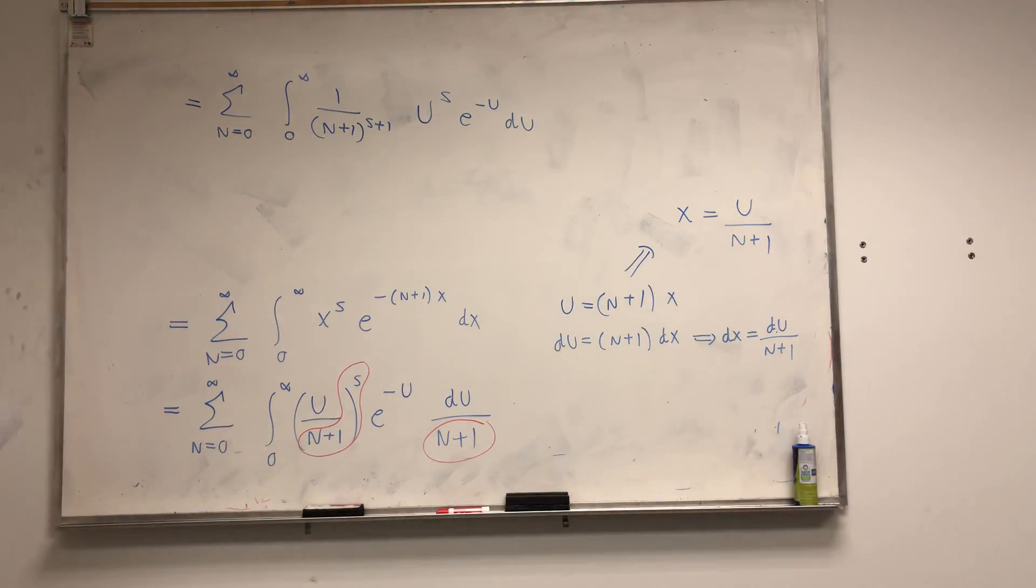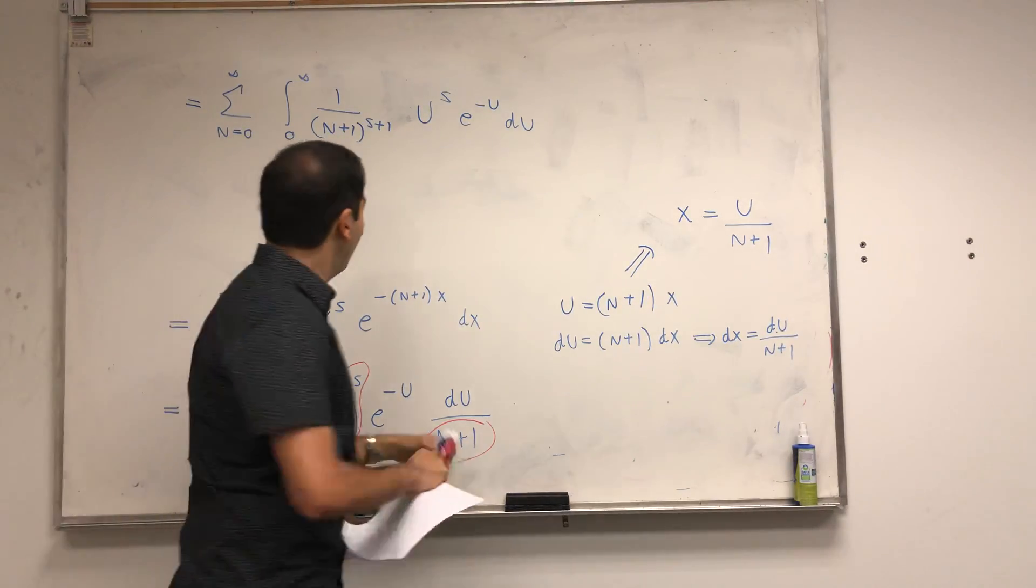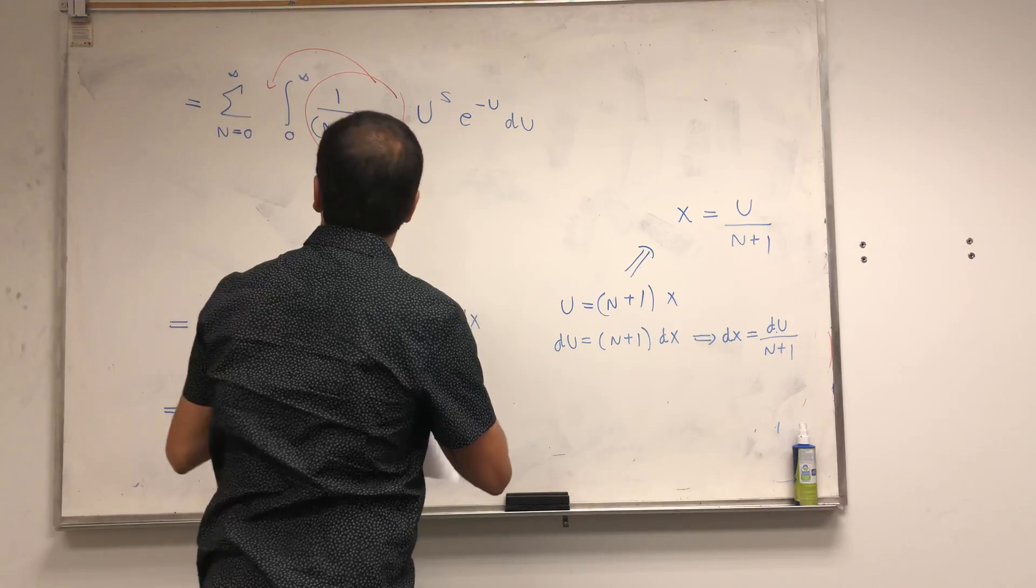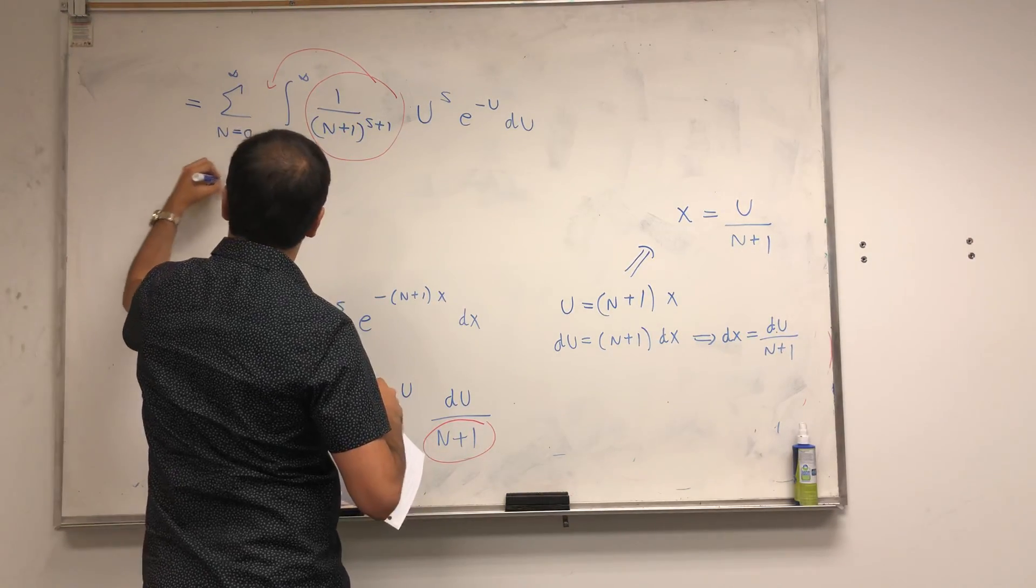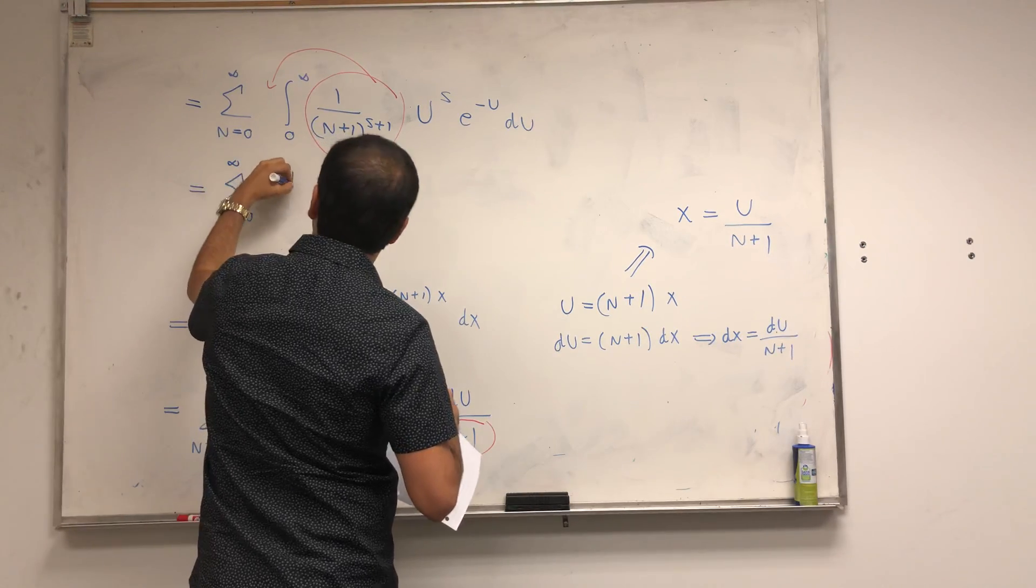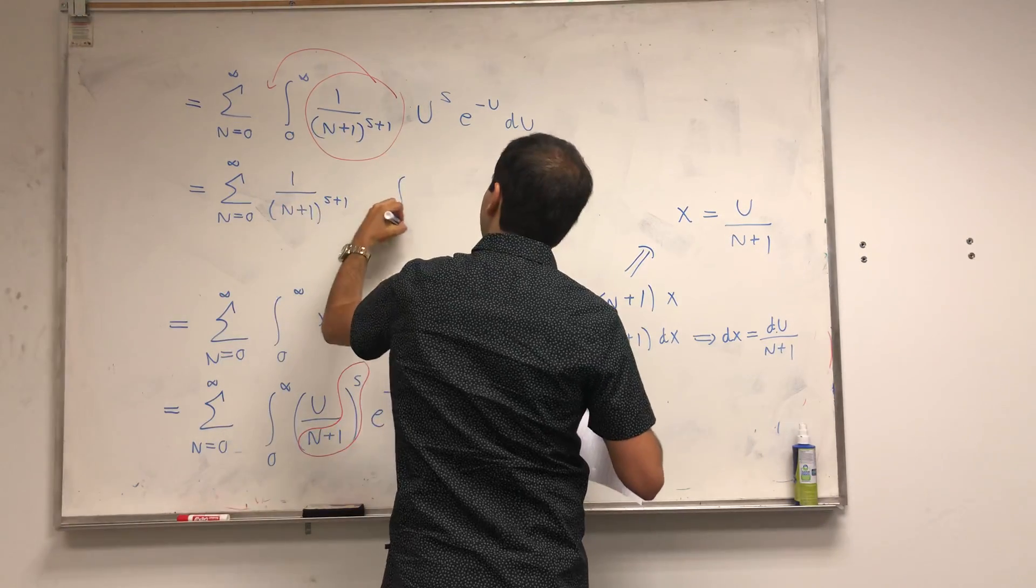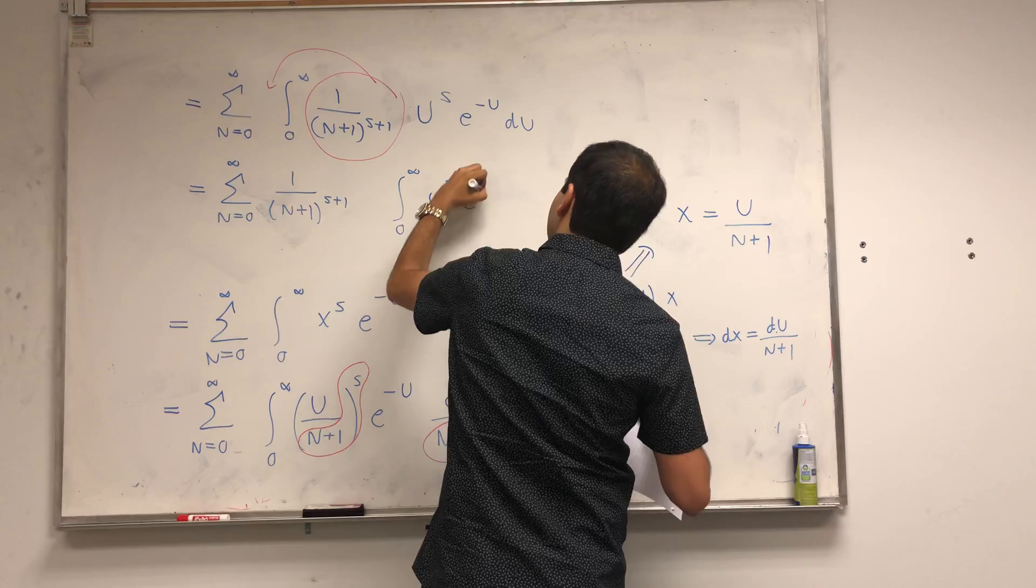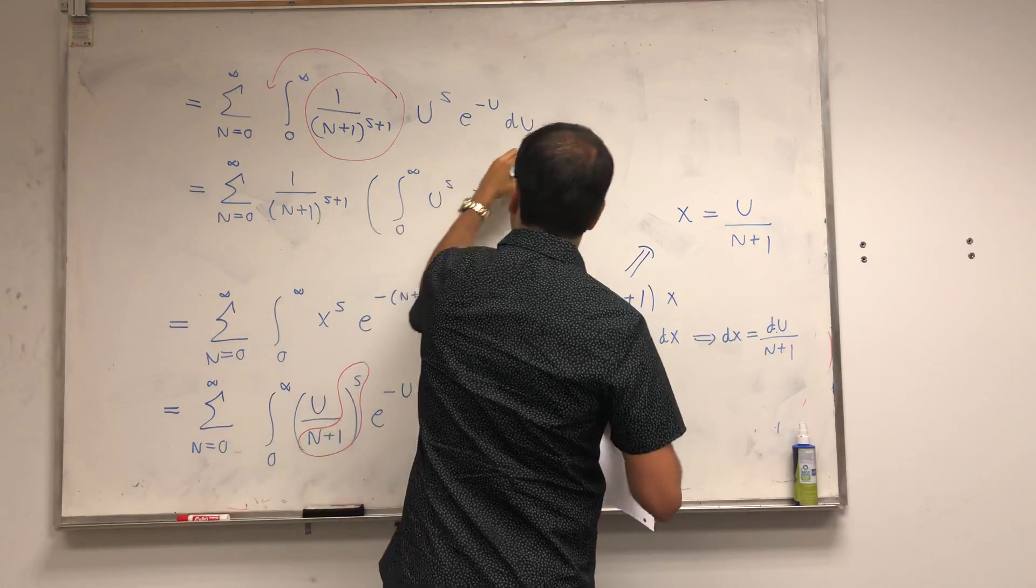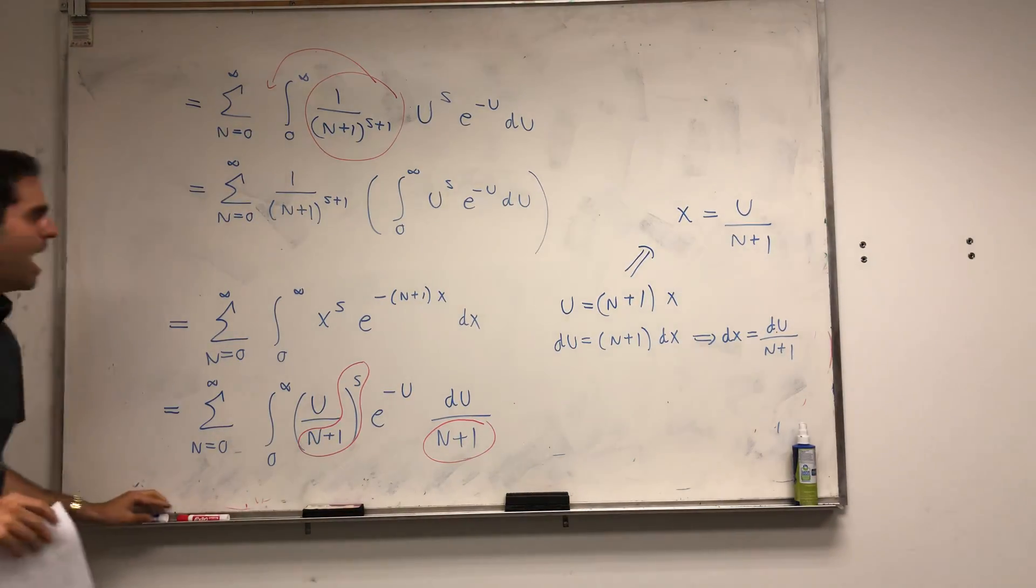Now here's a nice thing. Remember, s is a constant. And then n plus 1, well, it's a constant with respect to u. So you can literally just pull it out. So that is sum n from 0 to infinity of 1 over n plus 1 to the s plus 1 integral from 0 to infinity, u to the s, e to the minus u.